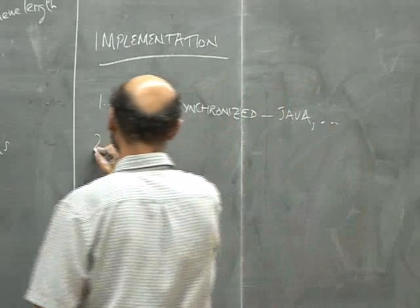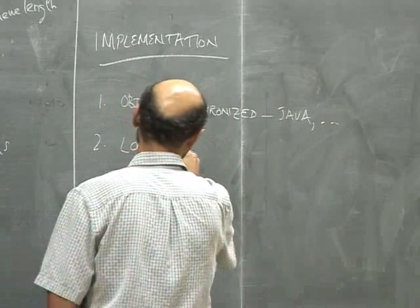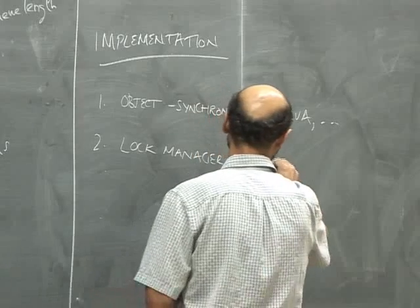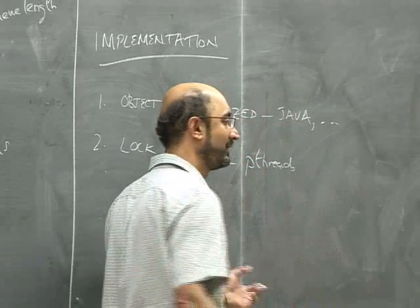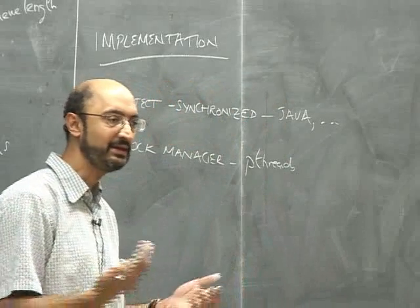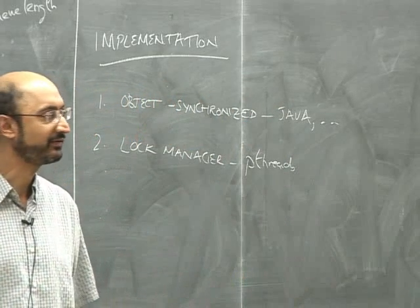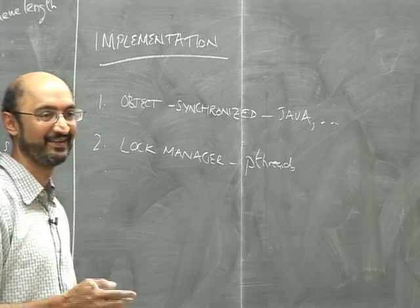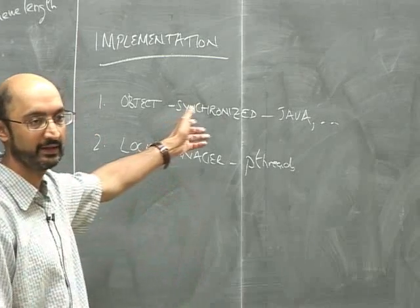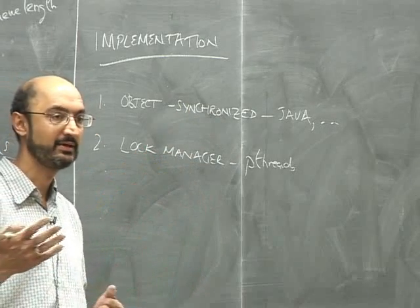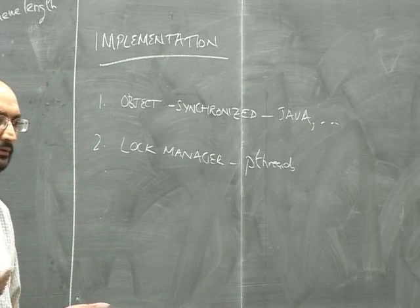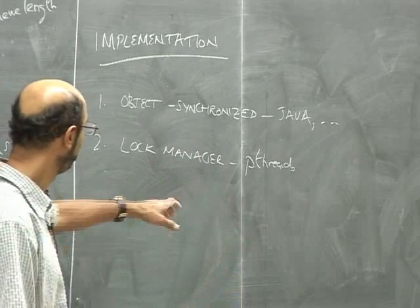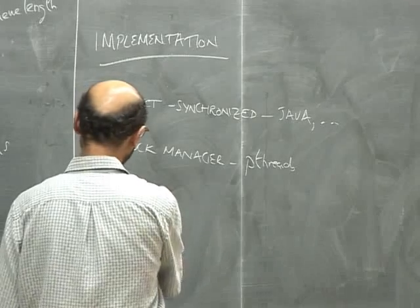The second approach is to use a lock manager built into a threading package like pthreads — a threading package for C. Is anybody using pthreads for assignment three? Is anybody using Java? For those using Java, the number of players in a game is something that gets read and written, so you want to make that synchronized to avoid this problem. The third approach is to avoid concurrent accesses entirely by using message passing.